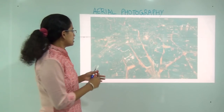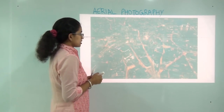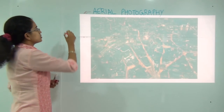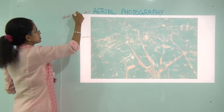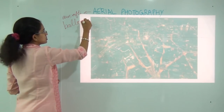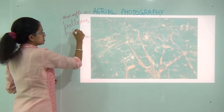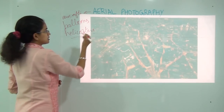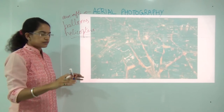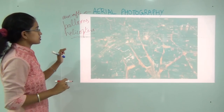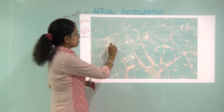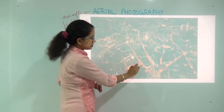This picture here shows an image of aerial photography. Aerial photography can be taken by various means — you can take it by aircraft, balloons, helicopters, or anything that flies above us. These aerial photographs depict various features on the Earth, such as buildings and roads.